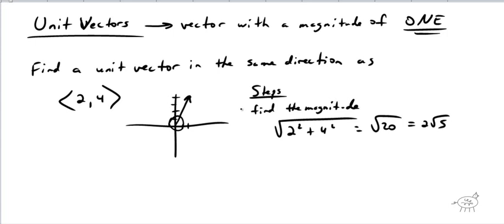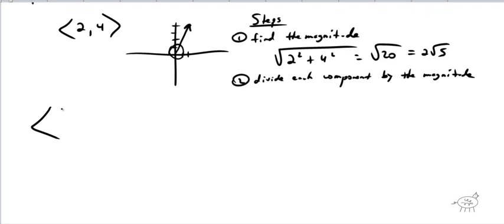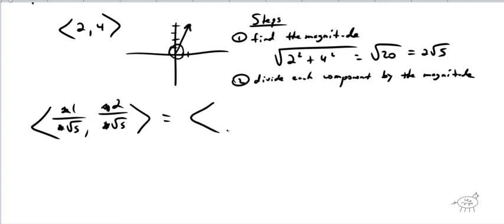The second step is to divide each component of the vector by the magnitude. So I have 2 divided by 2√5, and 4 divided by 2√5. You need to rationalize — you can't leave it like this. First simplify: the 2's cancel to give 1 over √5, and 4 over 2√5 simplifies to 2 over √5. Then multiply top and bottom by √5 over √5, and I get √5 over 5, comma 2√5 over 5.